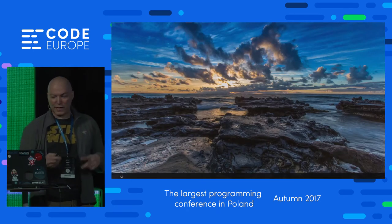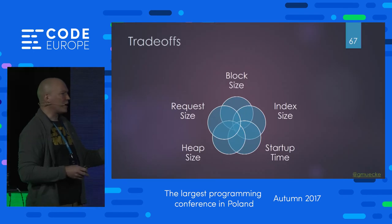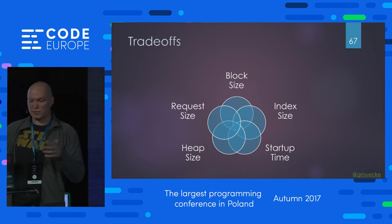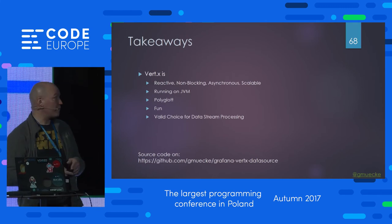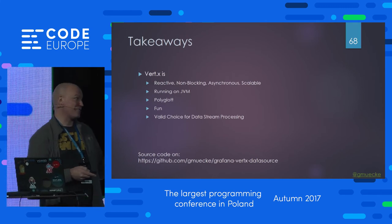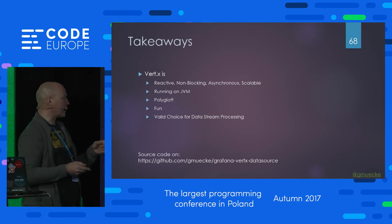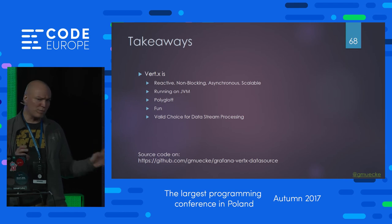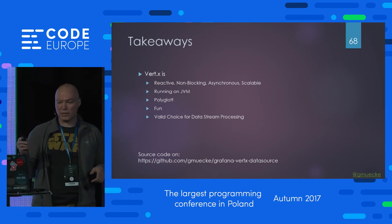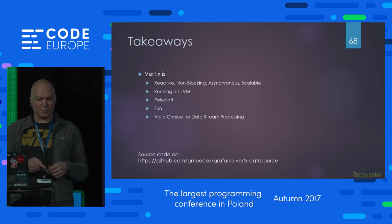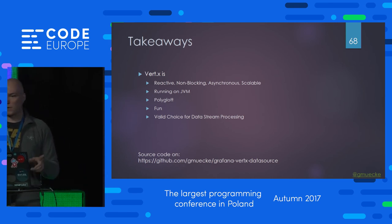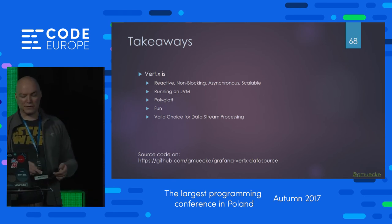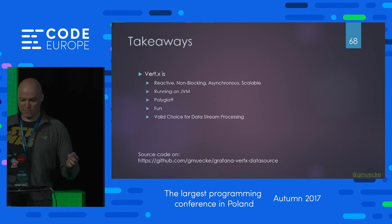When creating the data file index, you have configuration options like block size, index size, and startup time — you have to balance what works best for you. Takeaways: Vert.x is reactive, non-blocking, asynchronous, and scalable — good for buzzword bingo. It runs on the JVM, is polyglot, and very fun to work with. The documentation is very good, the community is very good, with lots of working examples. It's pretty fun especially coming from the Java world. When you want to do data processing, it's a very valid choice. Thank you.